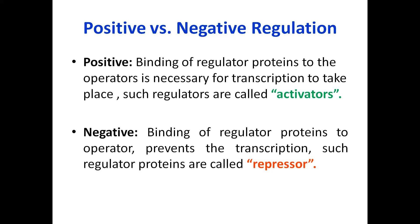In the negative mode of regulation, when the regulatory protein is on the operator, transcription will not happen. In positive regulation, when the regulatory protein is on the operator, transcription will happen — and those proteins are known as activators. In negative regulation, if the regulatory protein is on the operator, it prevents transcription — and those proteins are known as repressors. So, in positive regulation the regulatory protein is an activator; in negative regulation it is a repressor.